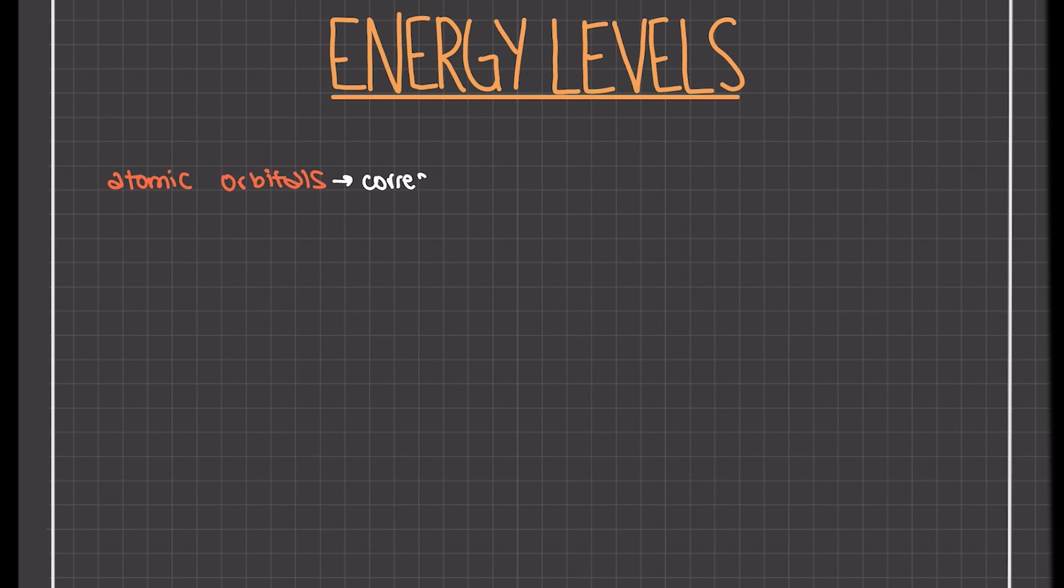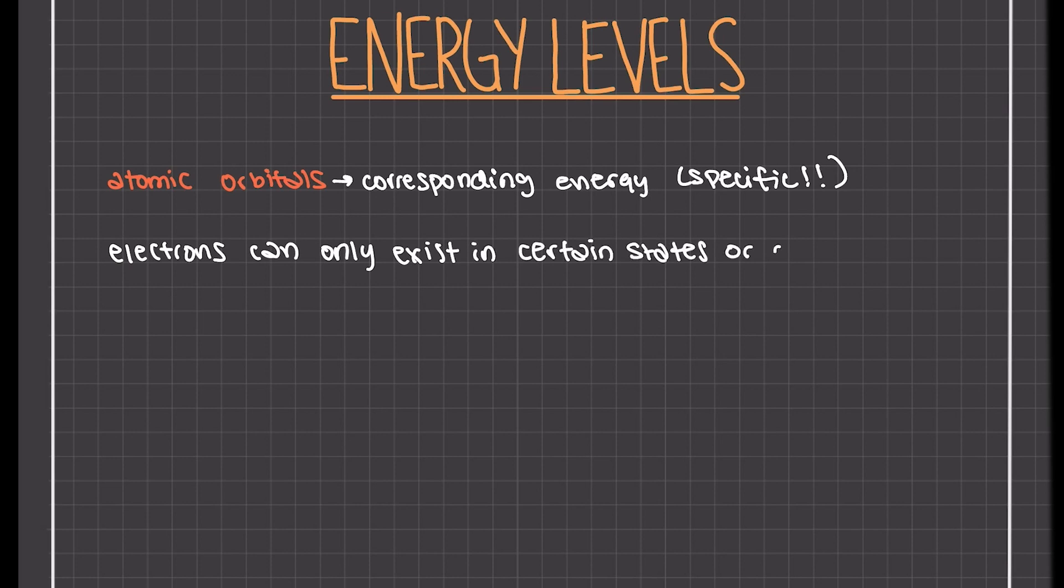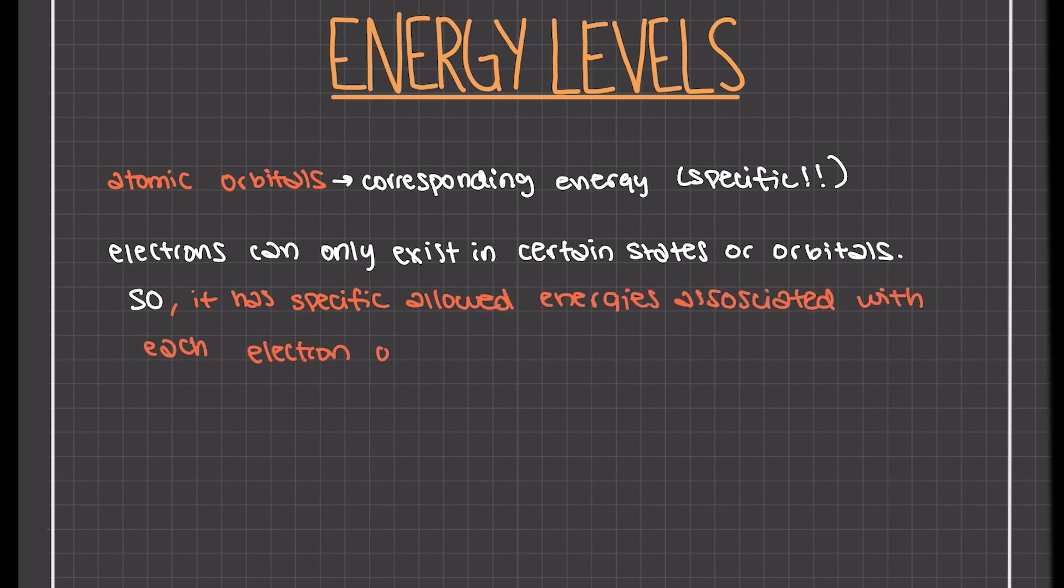We replace the idea of the orbit with the orbital, which describes the wave properties of an electron in an atom. An atomic orbital is almost like an allowed state—an allowed wave motion—of an electron. And just as an electron can only exist in certain states or orbitals, it can only have certain allowed energies. Each orbital is associated with a characteristic electron energy.